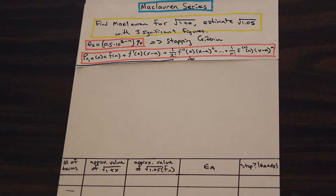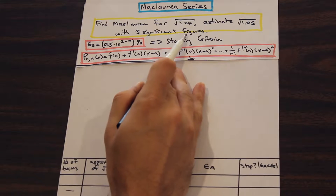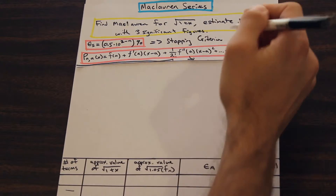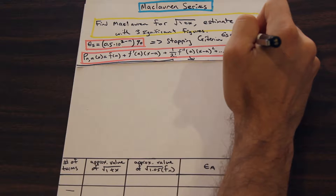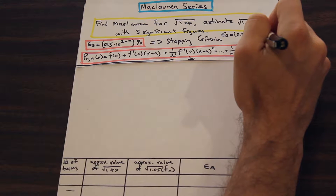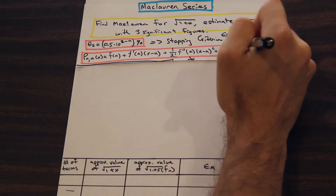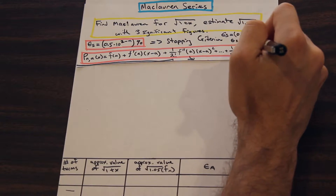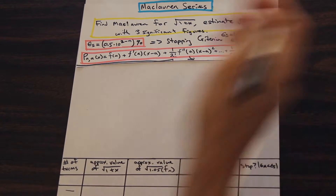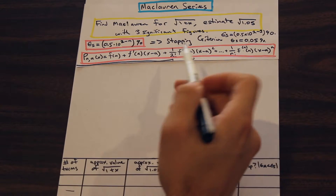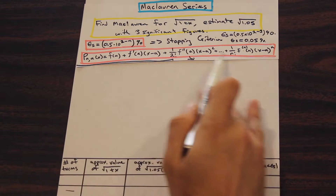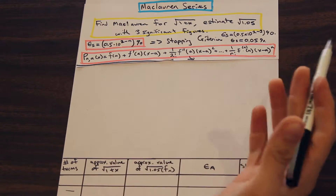We're not going to keep going forever; we're going to go as far as the question asks us to, and the question is only asking us to go to three significant figures. That is going to be our n. So we have epsilon_s, and that's equal to 0.5 times 10 to the 2 minus 3 percent, so our epsilon_s is going to be equal to 0.05%. Now, the difference between this Taylor series expansion and Maclaurin, as you should know, is when a is equal to 0 — that's the only difference.